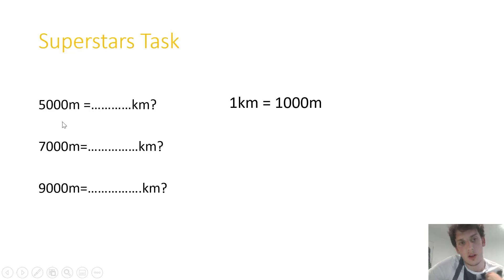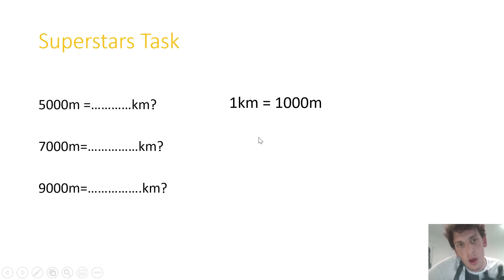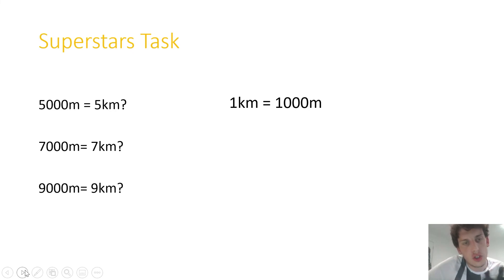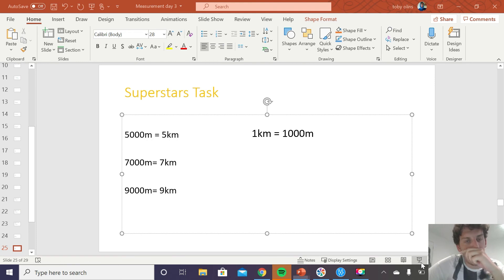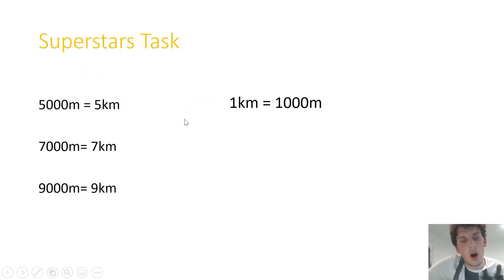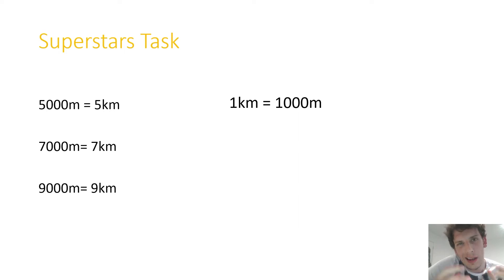Superstars, this is your task. On the left, you have different amounts of meters. I want you to tell me how many kilometers there are in each of these amounts. How many kilometers in 5,000 meters? How many kilometers in 7,000 meters? How many kilometers in 9,000 meters? Remember, one kilometer equals 1,000 meters. Please pause the video, complete this task, and then press play. In 5,000 meters, there are 5 kilometers. In 7,000 meters, there are 7 kilometers. And in 9,000 meters, there are 9 kilometers. If you didn't quite get it correct, don't worry — either send me an email or watch the video again.